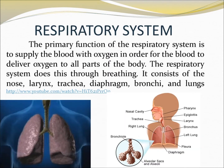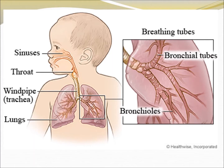Respiratory system. The primary function of the respiratory system is to supply the blood with oxygen in order for the blood to deliver oxygen to all parts of the body. The respiratory system does this through breathing. Here you can see the breathing parts: lungs, throat, sinuses, bronchioles, and breathing tubes.